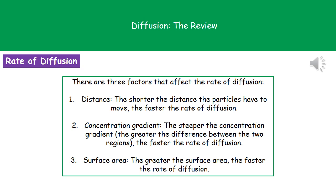Second is the concentration gradient. The steeper the concentration gradient, which means we've got a bigger difference between the area of high concentration and the area of low concentration, the faster the rate of diffusion. And finally, as we've already mentioned, the greater the surface area, the faster the rate of diffusion.